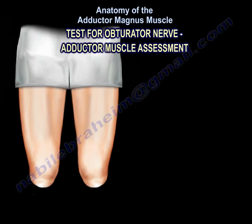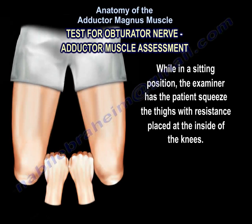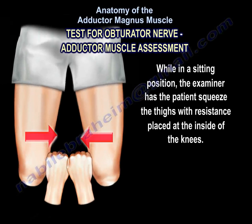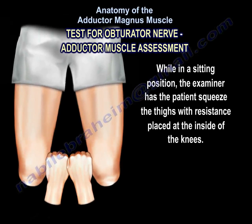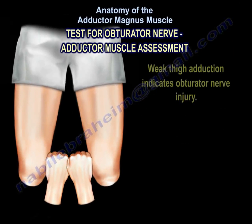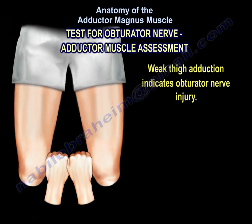Test for obturator nerve — adductor muscle assessment. While in a sitting position, the examiner has the patient squeeze the thighs with resistance placed at the inside of the knees. Weak thigh adduction indicates obturator nerve injury.